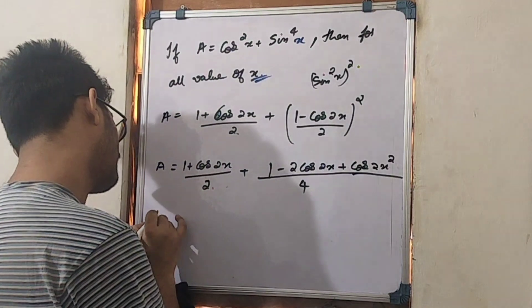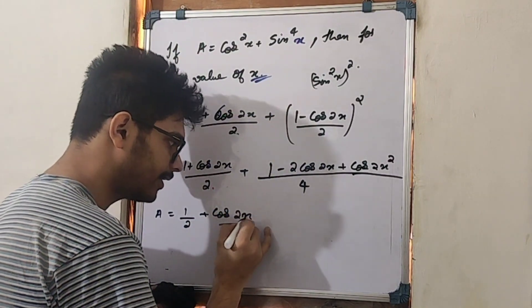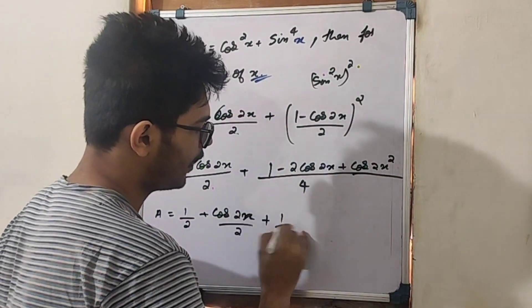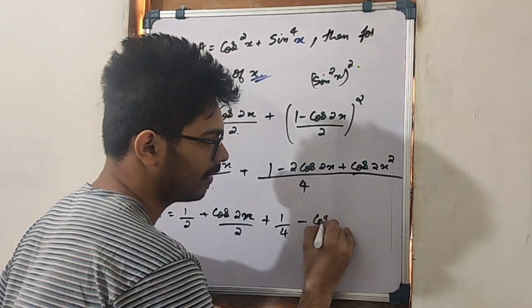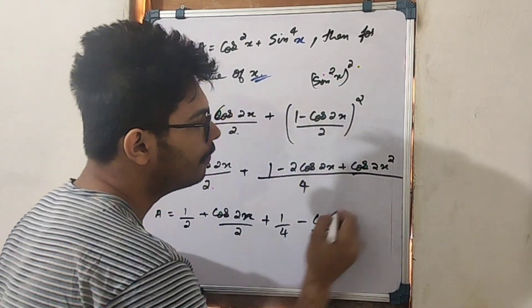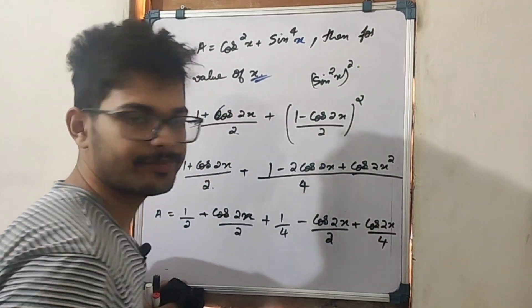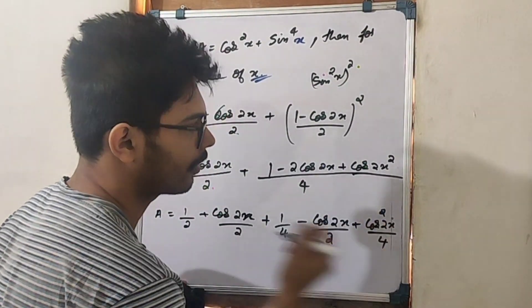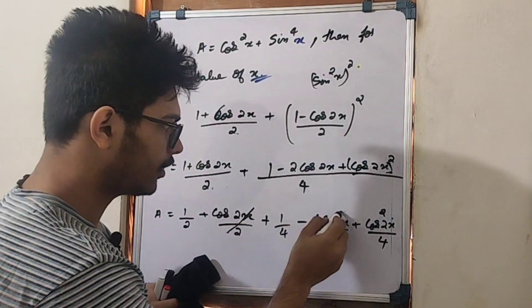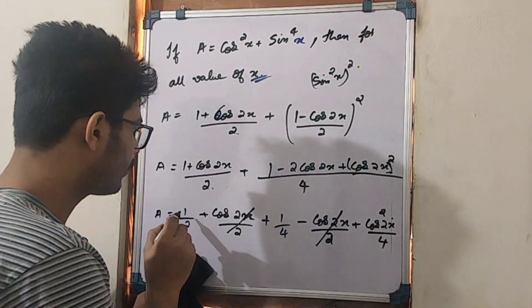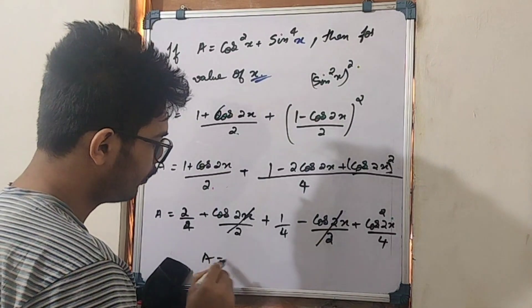Expanding: a = (1/2) + (cos2x)/2 + 1/4 − (2cos2x)/4 + cos²(2x)/4. The cos2x/2 terms cancel, leaving 2/4 + 1/4 = 3/4. So a = 3/4 + cos²(2x)/4.